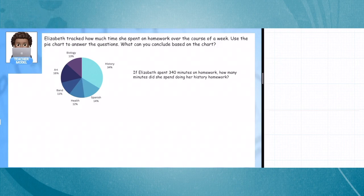Elizabeth tracked how much time she spent on homework over the course of a week. Use the pie chart to answer the question: What can you conclude based on the chart? I love pie charts. They represent part-to-whole relationships. They have to do with angles. There's so much data here and it connects geometry, ratios, percentages, angles. I love them so much. So let's look at this first part. What can we conclude if Elizabeth spent 340 minutes on homework? How many minutes did she spend doing her history homework?